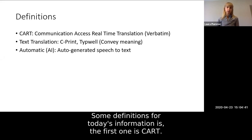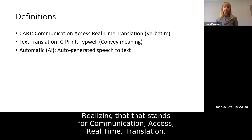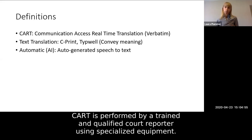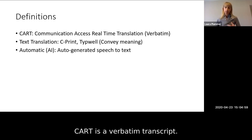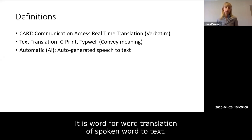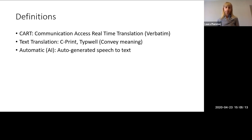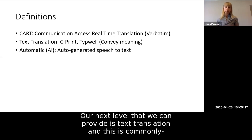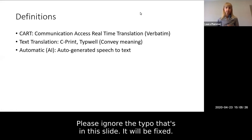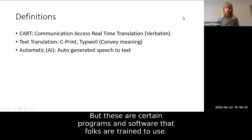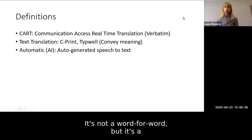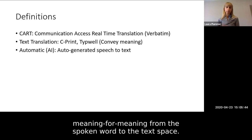The first definition is CART — Communication Access Real-Time Translation. CART is performed by a trained and qualified court reporter using specialized equipment, and it is a verbatim transcript. If I say 'um' 25 times in a paragraph, that's what's going to come across — it is word-for-word translation of spoken word to text. The next level is text translation. Common ones are C-Print and TypeWell. These are programs and software that folks are trained to use, and the purpose is to convey meaning — not word for word, but meaning for meaning from spoken word to text.